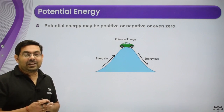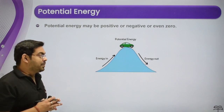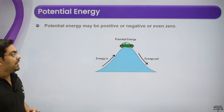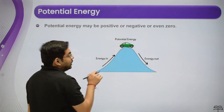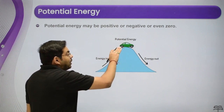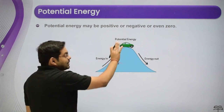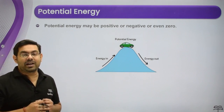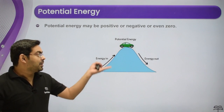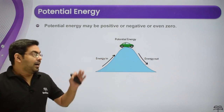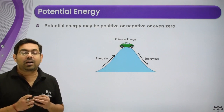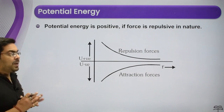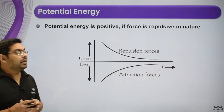Gravitational potential energy depends on height. If a car is going uphill, the engine does work and potential energy increases. If pushed from the top, it comes down automatically — potential energy converts to kinetic energy. Increasing height increases potential energy; decreasing height decreases it.